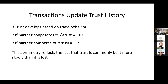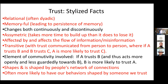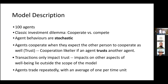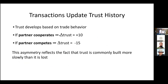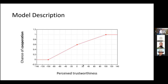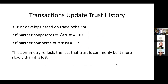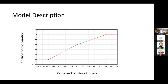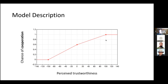Agents trade repeatedly with an average of one transaction per time unit. This is asynchronous — they do it at different times. Each transaction updates the trust, but it does so in a way reflective of stylized facts, including the asymmetry: it often takes more time to build trust than to lose it. If a partner cooperates, trust rises by 10 points; if the partner competes — that is, defects against me — my trust goes down by 15.